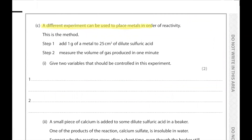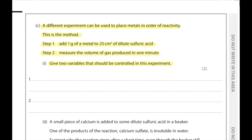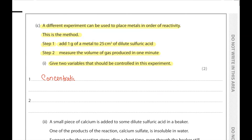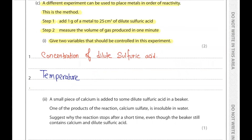Part C. A different experiment places metals in order of reactivity: add 1 g of metal to 25 cm³ of sulfuric acid and measure the volume of gas produced in one minute. Give two variables that should be controlled. This reaction is affected by temperature, concentration of the dilute sulfuric acid, and the surface area of the metal. So: (1) concentration of dilute sulfuric acid, (2) temperature, and as a bonus (3) surface area of the metal.